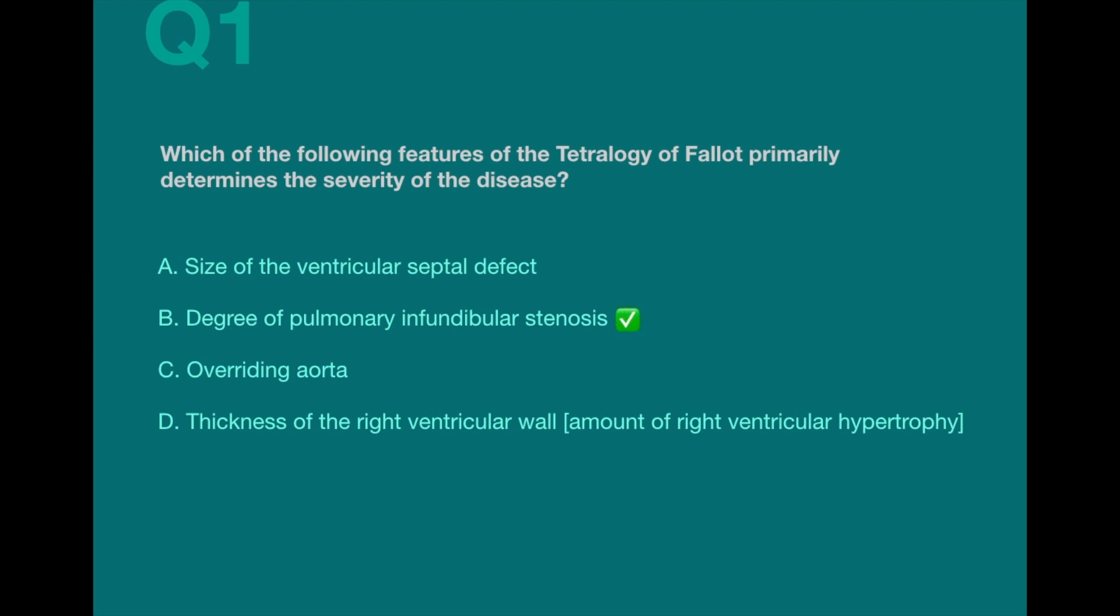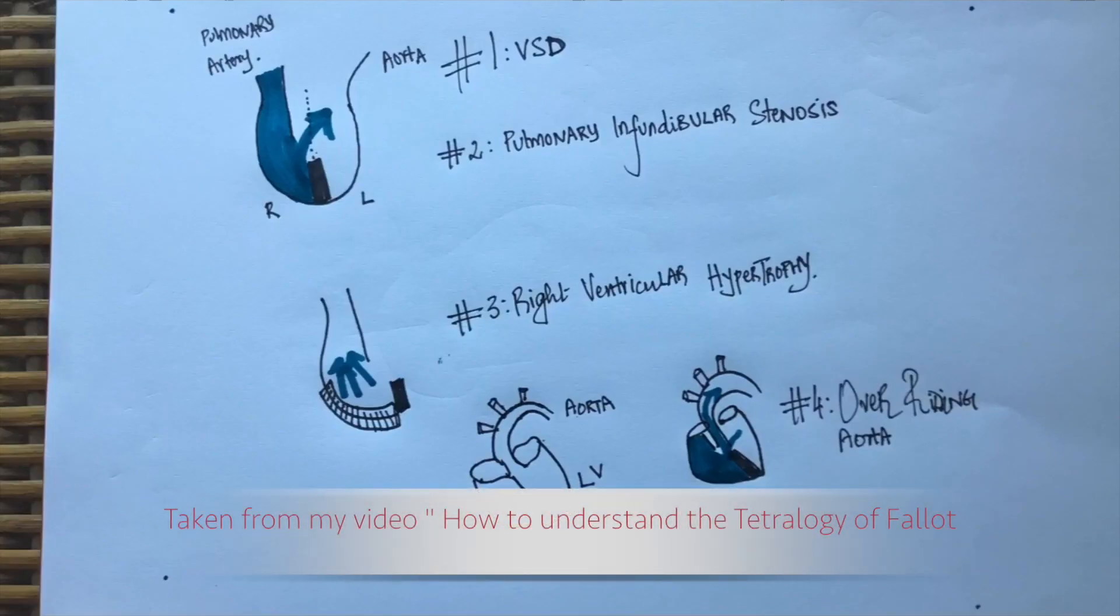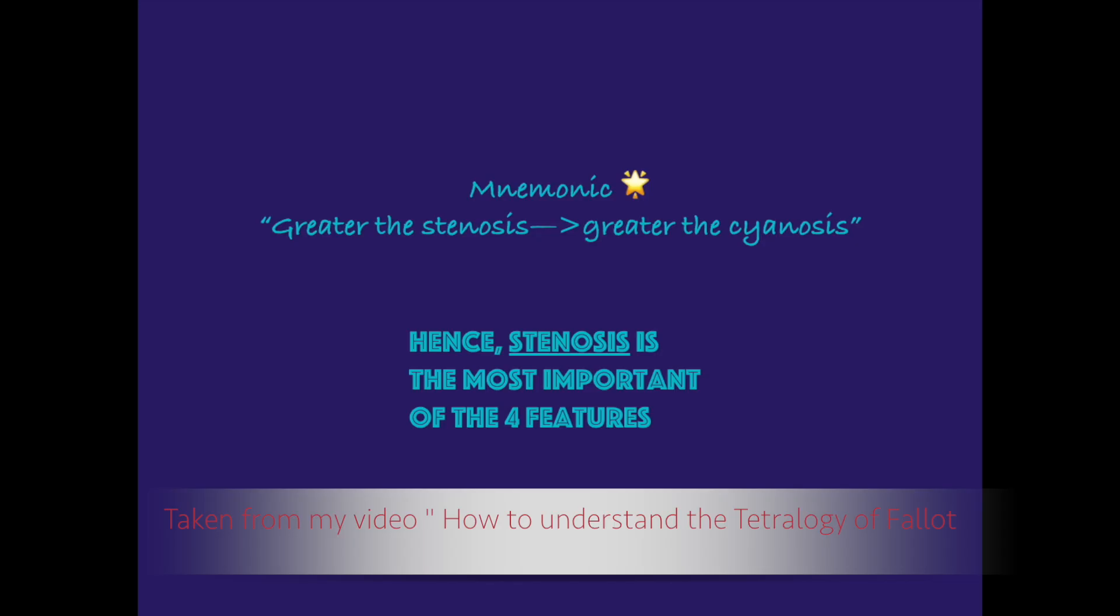The correct answer is B. We all know that cyanosis is bad for the patient because there is less oxygen being delivered to the tissues. In my video on the Tetralogy of Fallot, I have mentioned that greater the stenosis, greater the cyanosis. This is because of two reasons. Firstly,